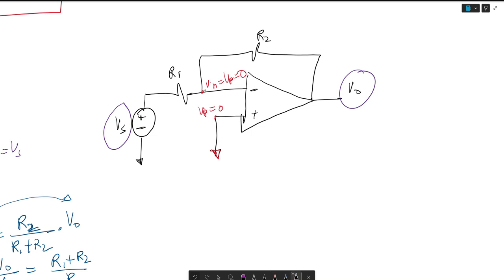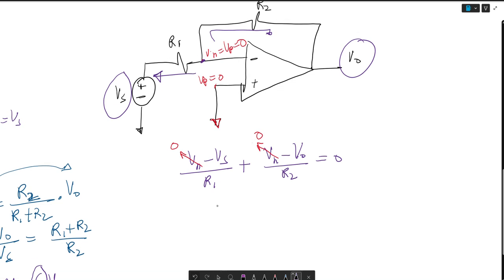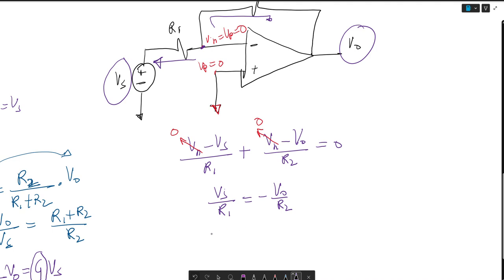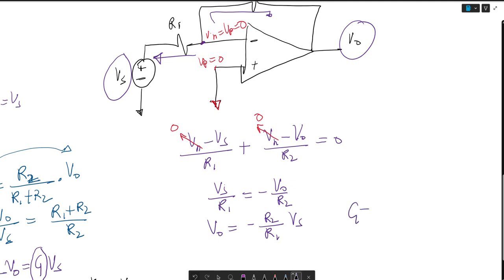If we were to do a nodal analysis here at VN, we could say VN minus VS over R1 plus the current going this direction, which is VN minus VO over R2 equals 0. We consider that VN is 0, so VS over R1 equals negative VO over R2. Let's write it in terms of VO. So VO equals negative R2 over R1 VS. And that G, which equals VO over VS, equals negative R2 over R1.